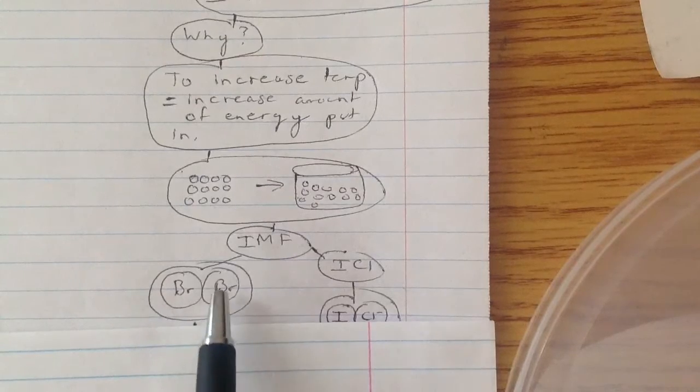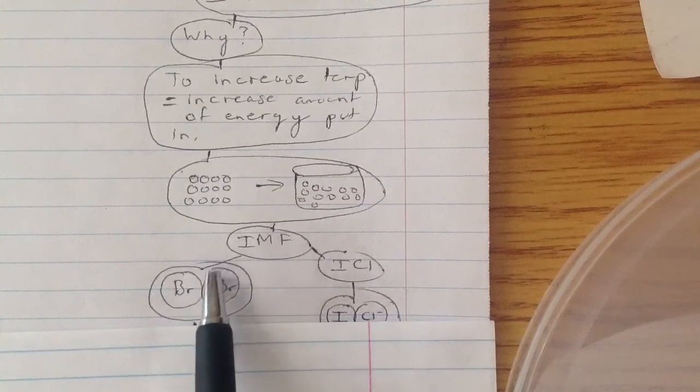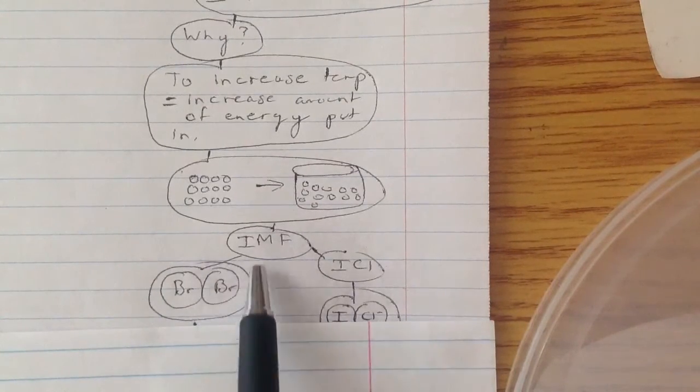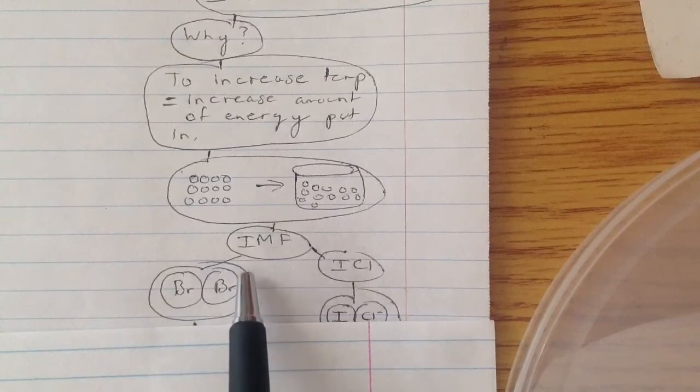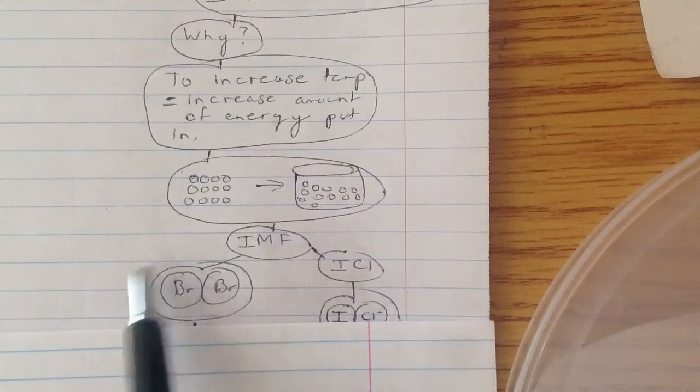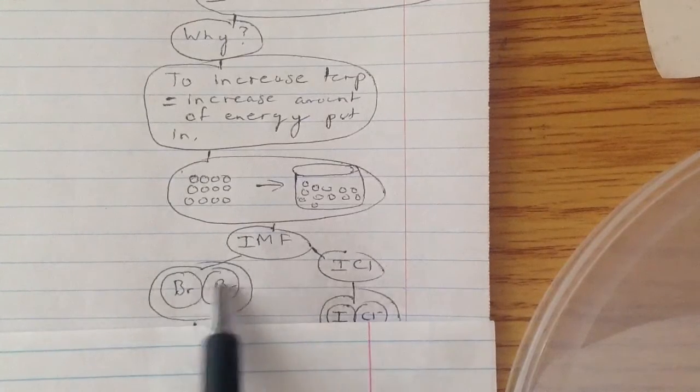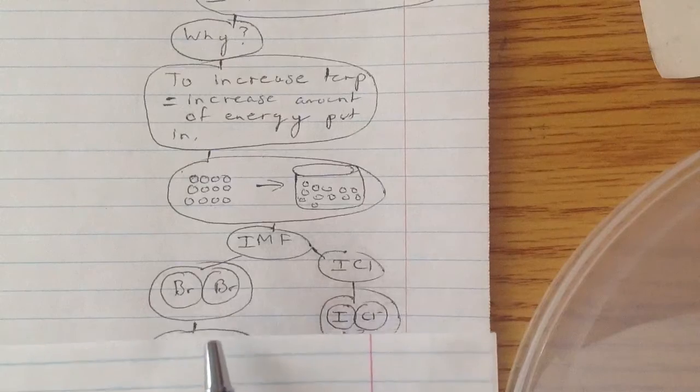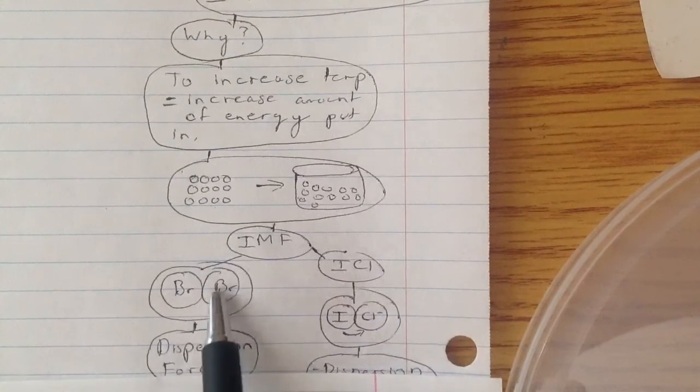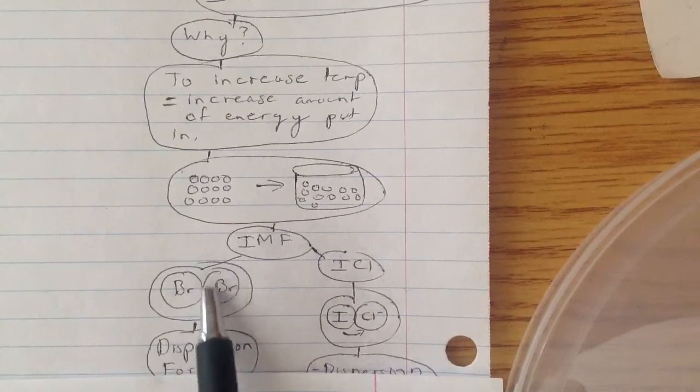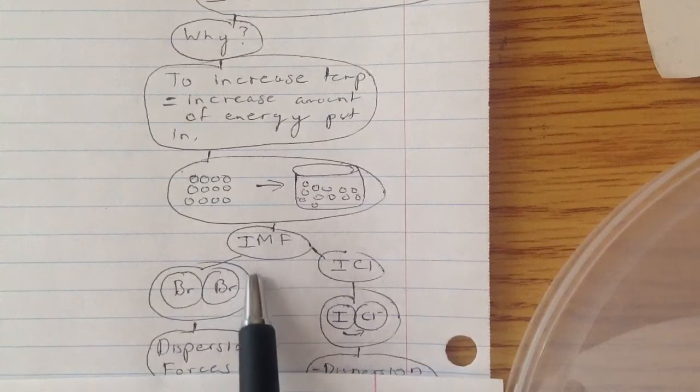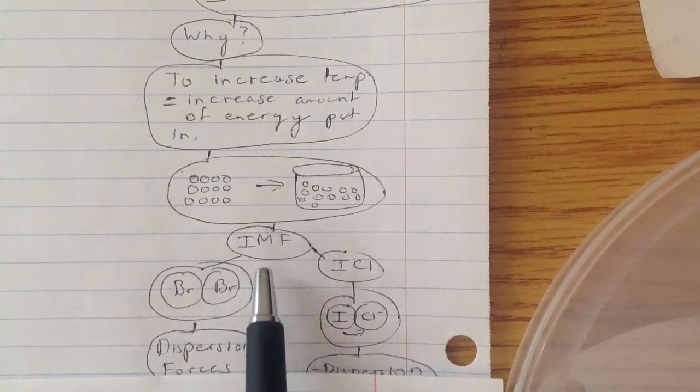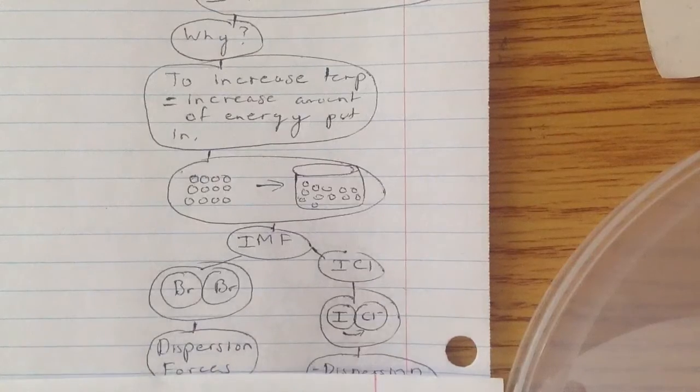But in nature, nothing's perfect. So sometimes there can be more atoms on this side and be a negative charge and less atoms on this side, making a positive charge, giving it intermolecular forces, which is dispersion forces, because it has a little bit of disturbance which causes a slightly positive and slightly negative charge.